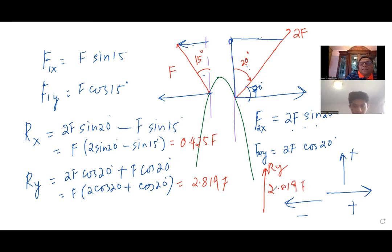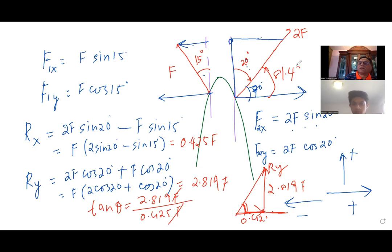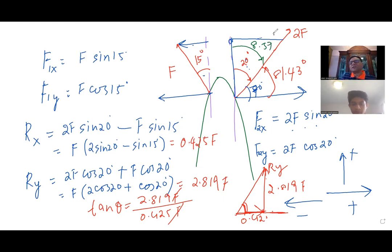So now you get the resultant force. You are mainly interested in the angle. As you can see, the resultant y component is 2.819F and the x component is 0.425F going in this direction. So you use tan theta: tan theta equals 2.819F divided by 0.425F. F cancels, so theta equals 81.43 degrees. Now we want to give the angle from the north, so it is 90 minus 81.43, which gives you 8.57 degrees. From the north, it will be 8.57 degrees east.